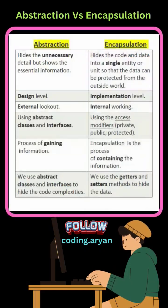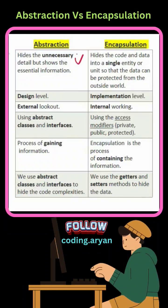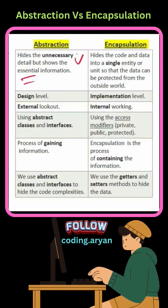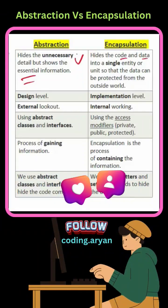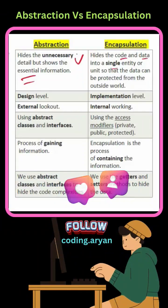Abstraction is a feature of object-oriented programming that hides the unnecessary detail but shows the essential information. Encapsulation is also a feature that hides the code and data into a single entity or unit so that the data can be protected from the outside world.